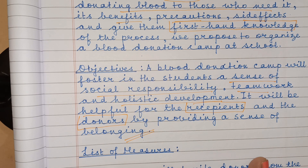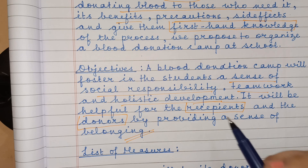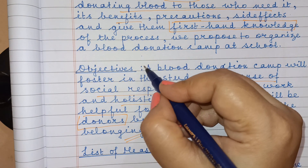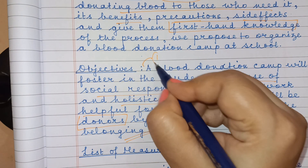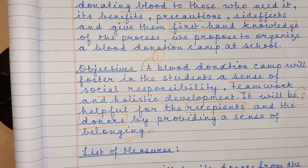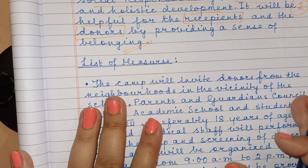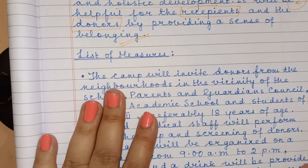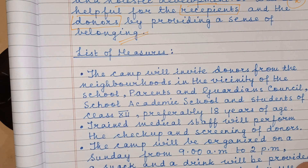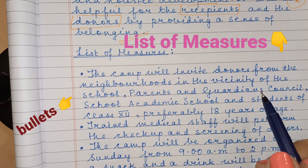This subject must be introduced at the school level itself. After the objectives — two objectives — you may change the paragraph. Number one and objective number two. List of measures: leave one line, use bullets while writing the list of measures. There are four list of measures.